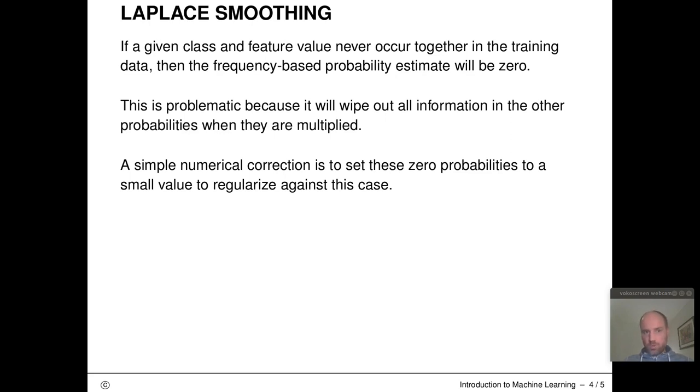Because of this, we do a simple numerical correction called Laplace smoothing, where we set these zero probabilities to a very small value to regularize against this case. I will not go into the details here. This is a very standard trick for categorical and multinomial distributions which helps to deal with this problem.